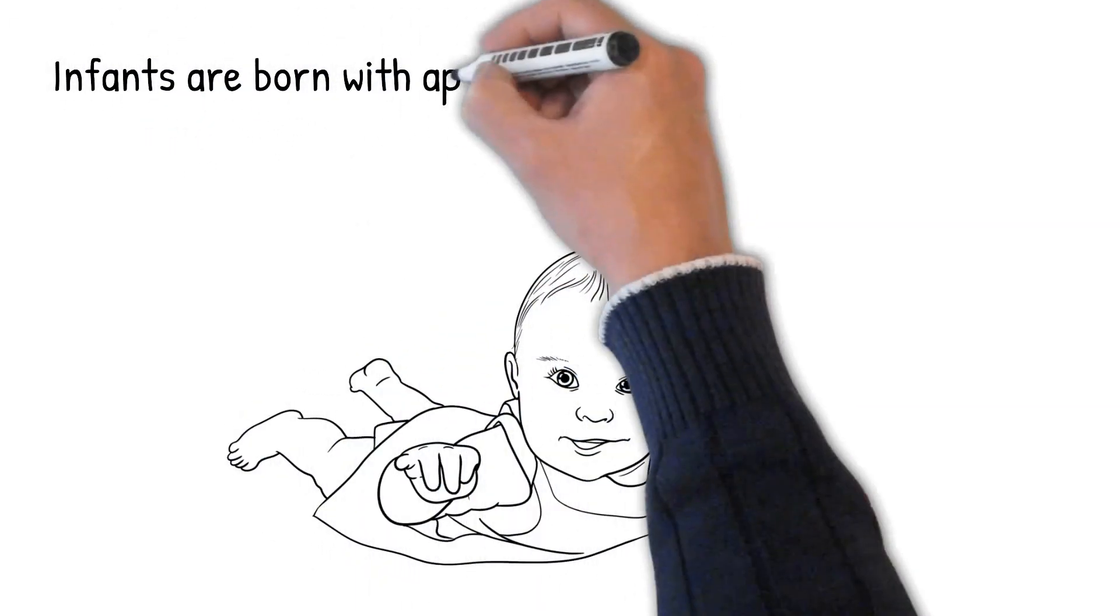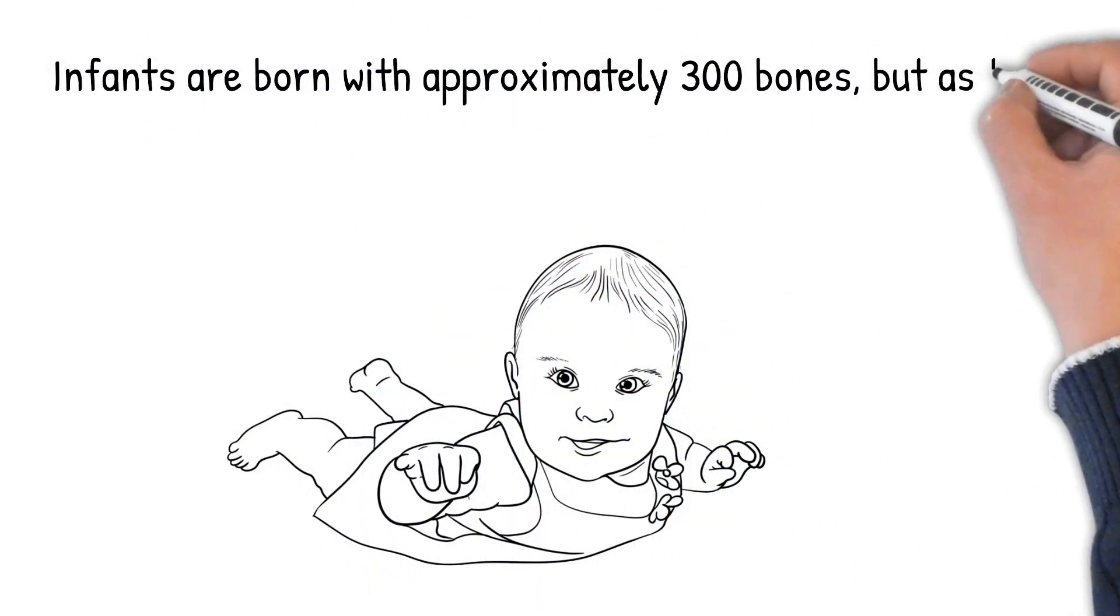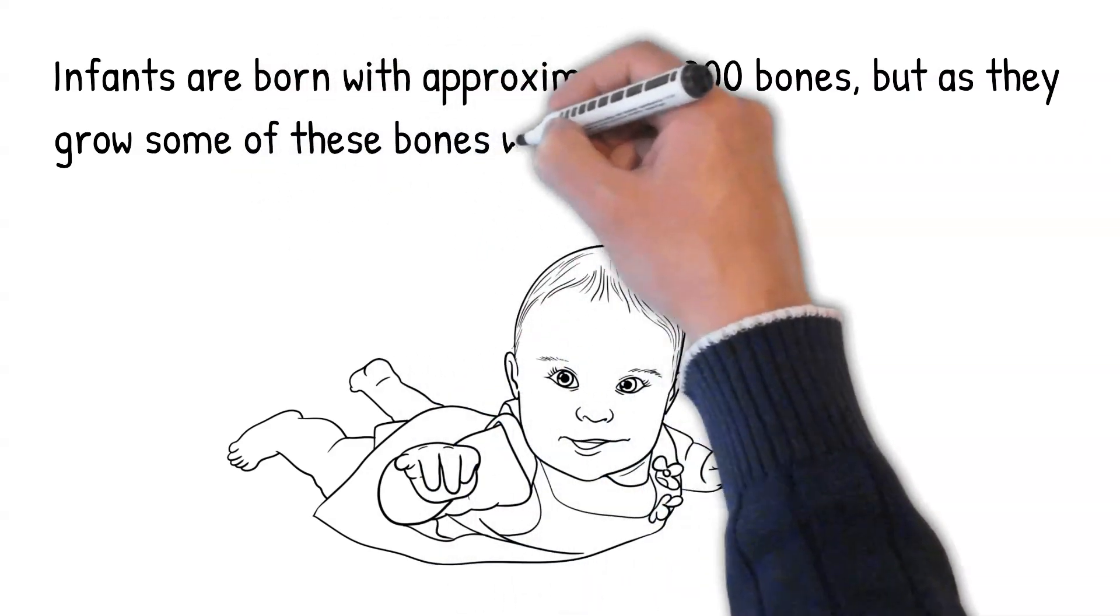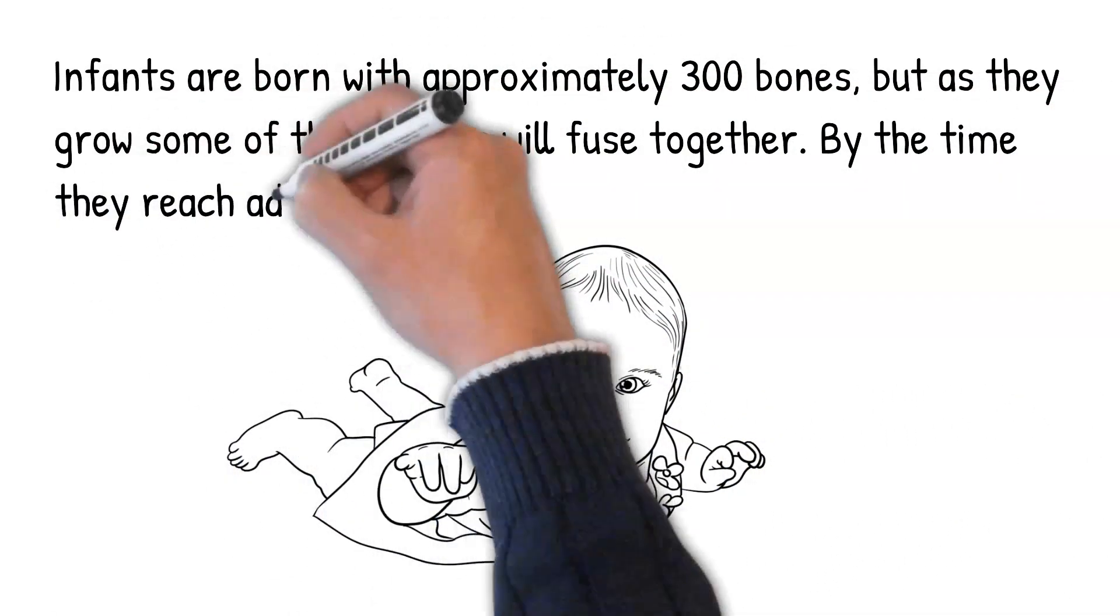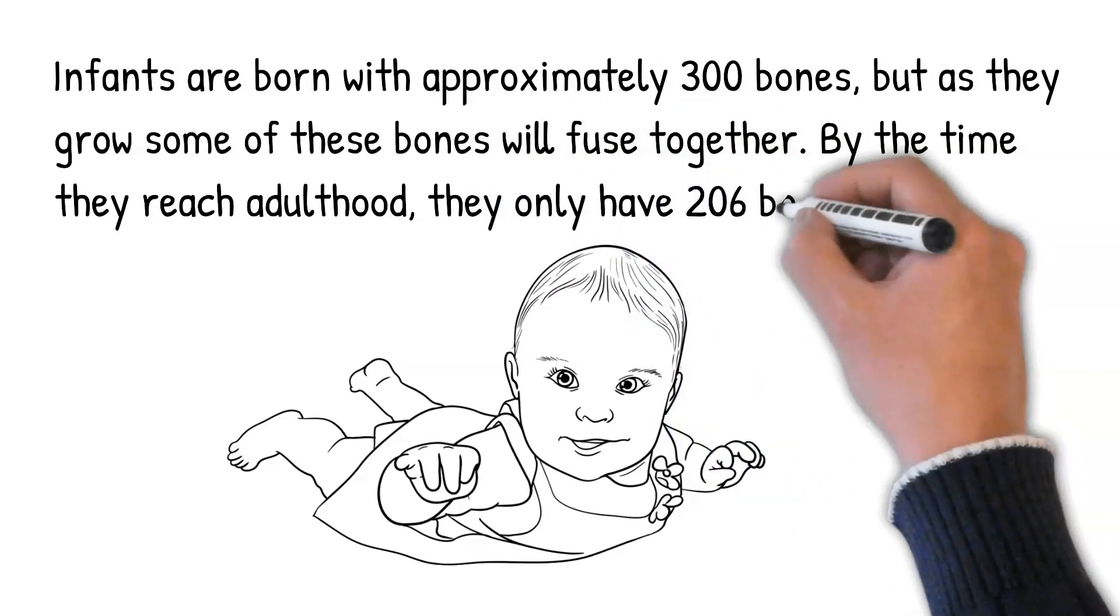Infants are born with approximately 300 bones, but as they grow, some of these bones will fuse together. By the time they reach adulthood, they only have 206 bones.